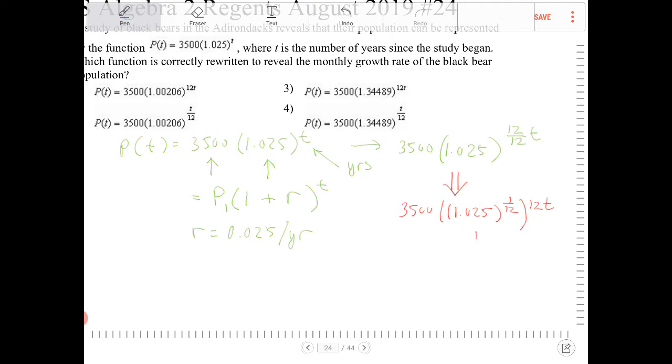Because that original value was the rate of growth per year, not monthly. So by raising it to the 1/12th now, I can then see what the monthly rate of growth will be.